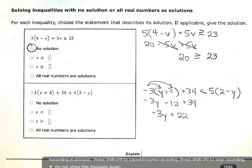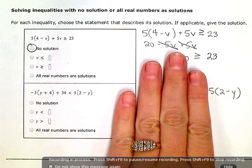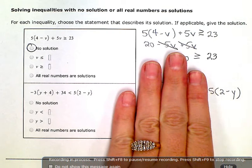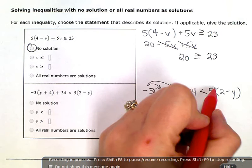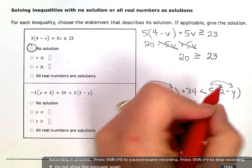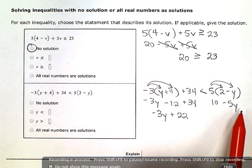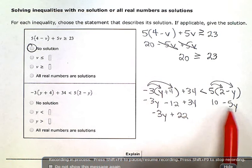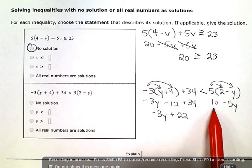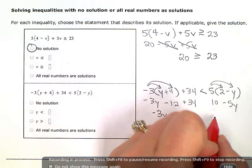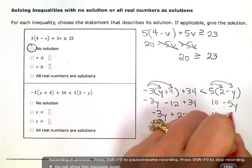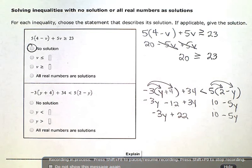Now I'm going to do the same thing on this side. Just treat it like its own little miniature problem and simplify. So if I distribute over here, I get 10 minus 5y. And I can't combine those terms because this one has a variable and that one doesn't. So I have to just leave them as is.